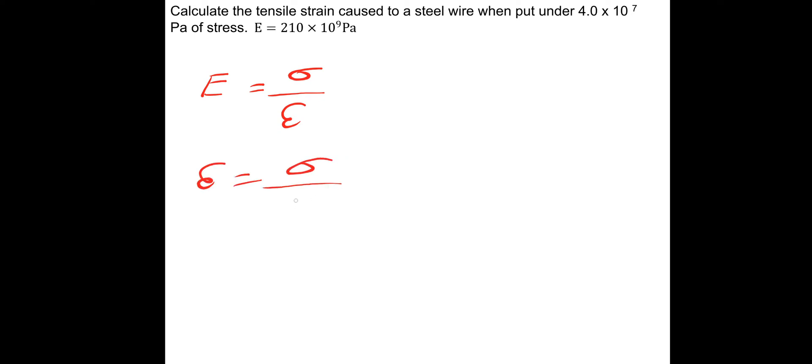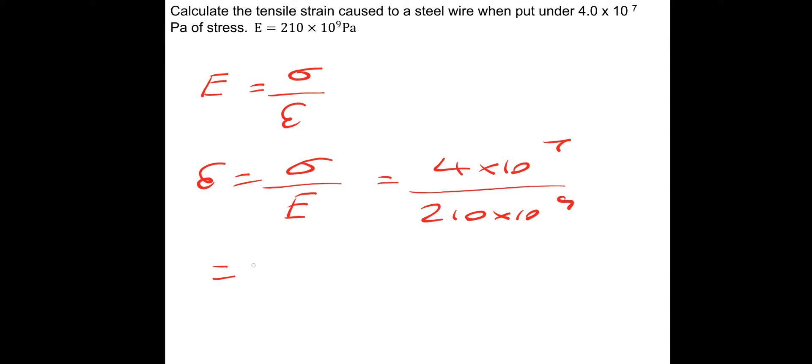Calculate the tensile strain caused to a steel wire when put under 4 times 10 to the 7 pascals of stress. Using Young's modulus equals stress over strain, we rearrange to get strain equals stress divided by Young's modulus. The stress is 4 times 10 to the 7 pascals divided by the Young's modulus of steel, 210 times 10 to the 9, giving 1.9 times 10 to the minus 4. Multiplying by 100 gives a percentage change of 0.02%.